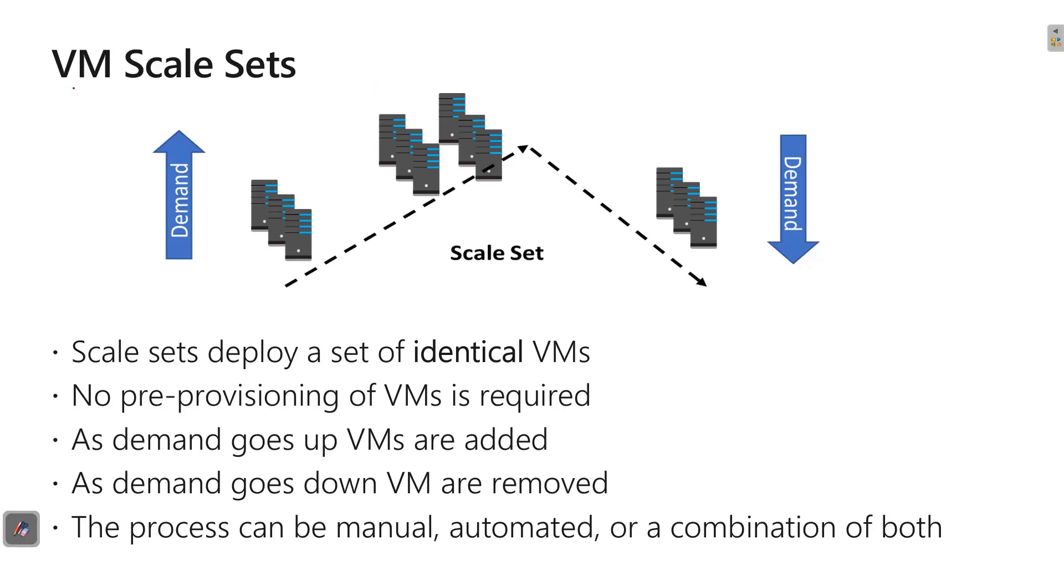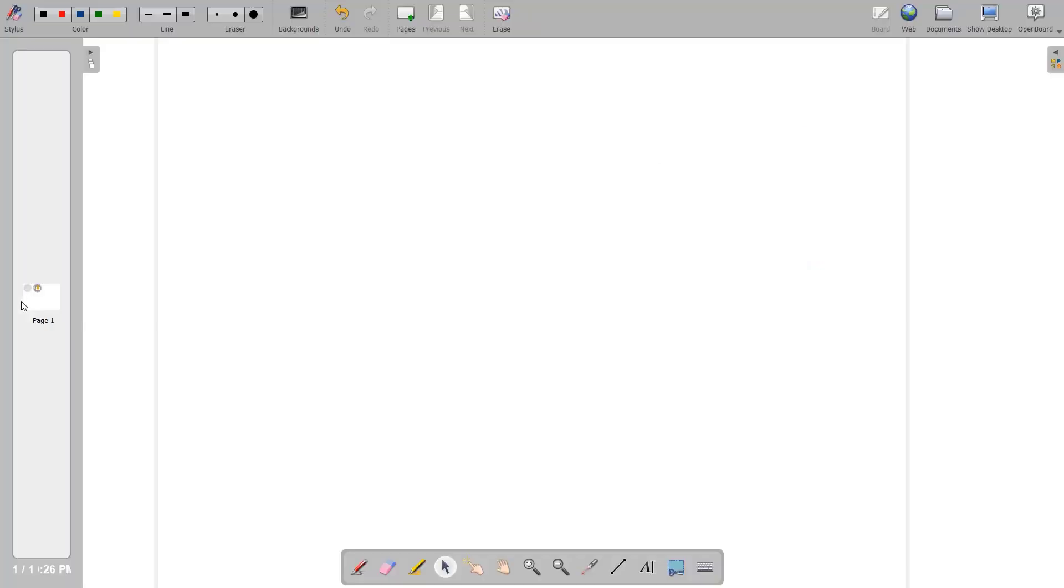But before understanding more about virtual machine scale set as a product, we will go to whiteboard and try to understand more about scalability and what are all the different types of scaling which is available. So what is scalability and how is it different from elasticity?